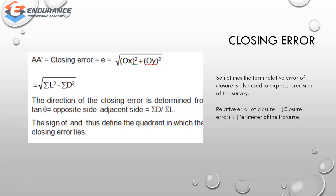Closing error is used to check accuracy. Sometimes the term relative error of closure is also used to express the precision of a survey. The relative error of closure is the closing error divided by the perimeter of the traverse — that is, the closing error divided by the overall traverse length.